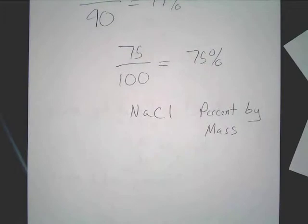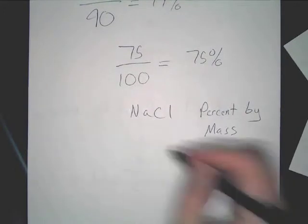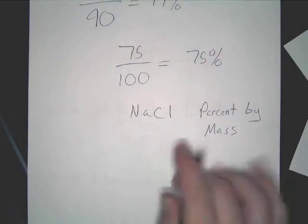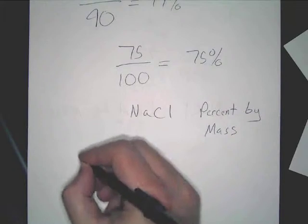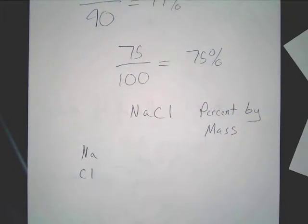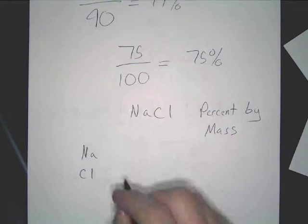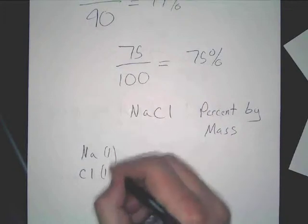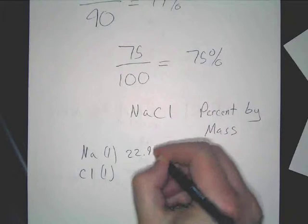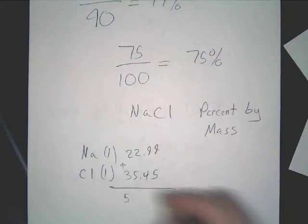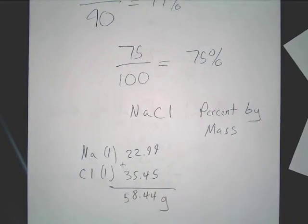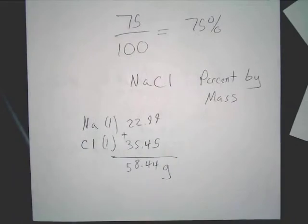It's as straightforward as it sounds. All you need to do is first figure out the total mass of sodium chloride. Get out your periodic table. Look up sodium and look up chlorine. Sodium is 22.99, chlorine is 35.45 in terms of mass. You add it up and it comes out to 58.44 grams. So that's your total mass.